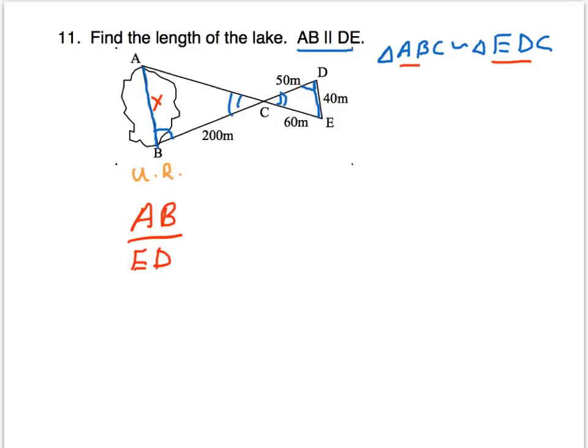Now we're looking for a known ratio. BC corresponds with length DC. For the known ratio, we'll use the length BC, which corresponds with DC.